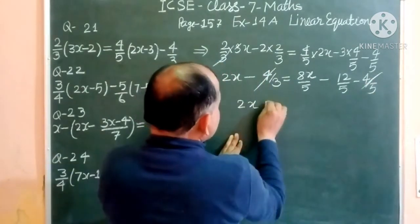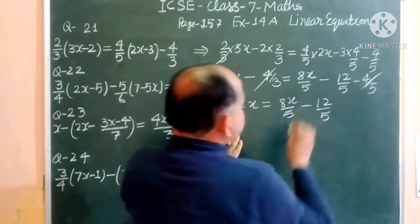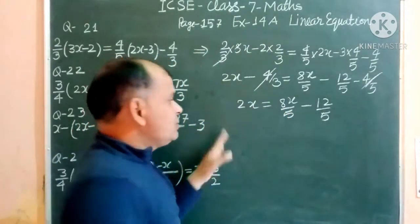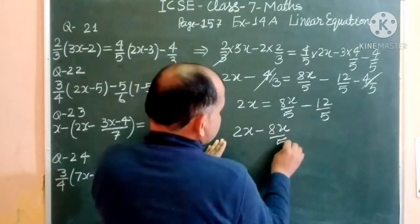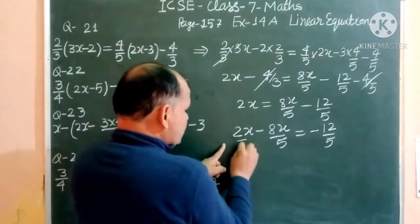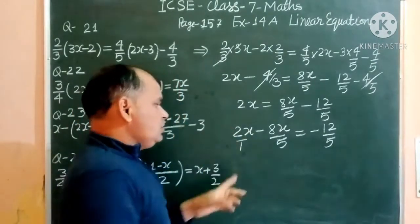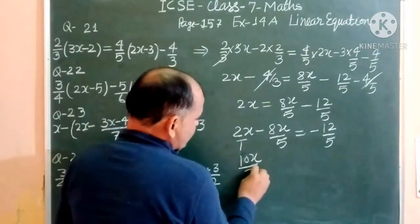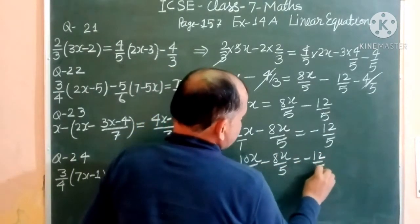After cancellation we have 2x = 8x/5 - 12/5. Bringing 8x/5 to the left side it becomes negative. We make the denominators equal by multiplying 2x by 5/5, giving 10x/5 - 8x/5 = -12/5. The 5s cancel out.